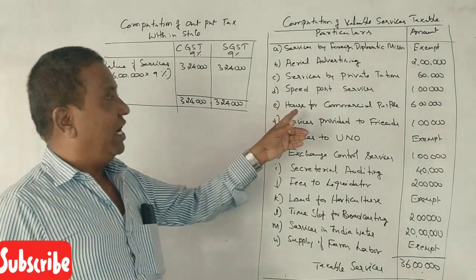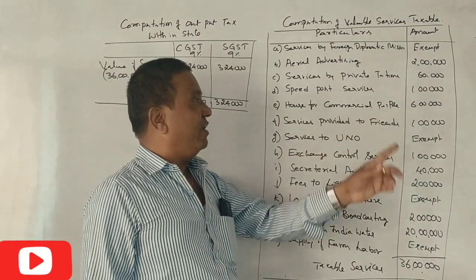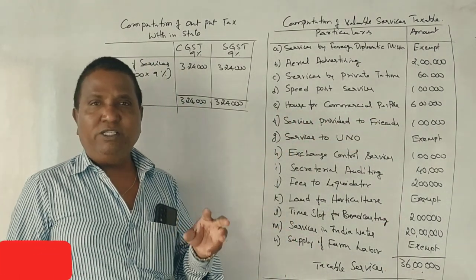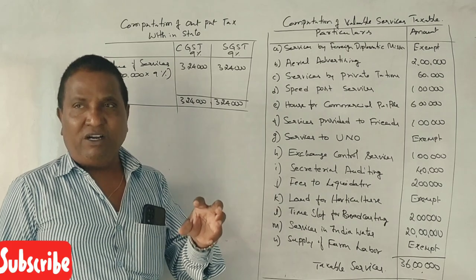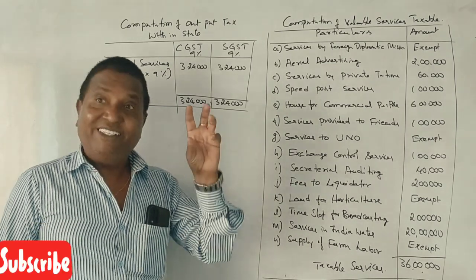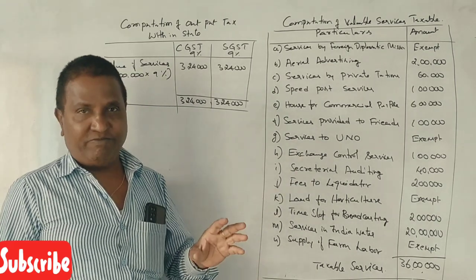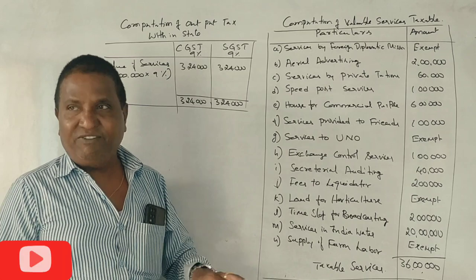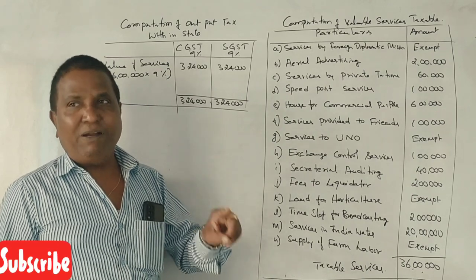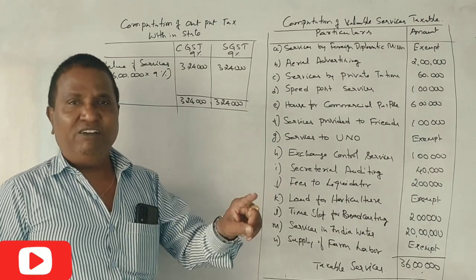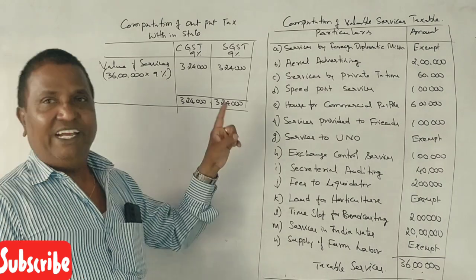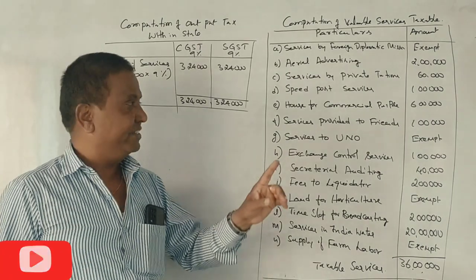Next, house rent for commercial purpose. If any house is given for rent for residential purpose, it is exempted — no GST will be levied. But if any building is given for commercial purpose, then it is a taxable service.